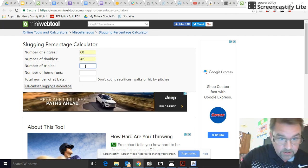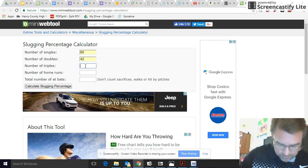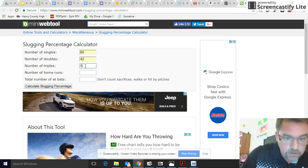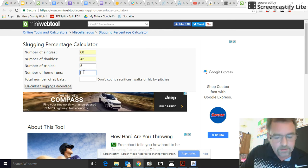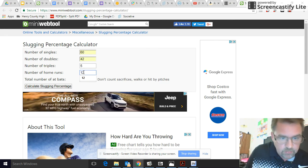When I typed it in I actually typed in the wrong number and it made me think that my calculations were wrong. Just go slow and don't make any mistakes typing in. That's 5 triples, 12 home runs.